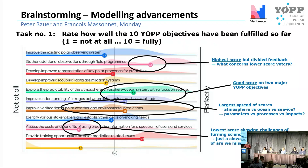The lowest score was for cost and benefits of using predictive information for users and services. We wonder if it's simply a question of time, as this activity naturally takes a long time to build up, and in one or two years we might harvest the fruits of that work.